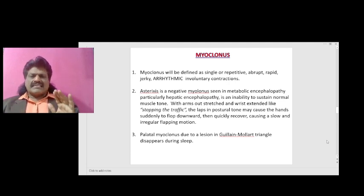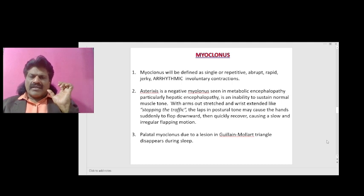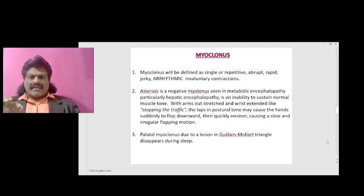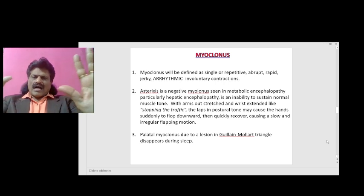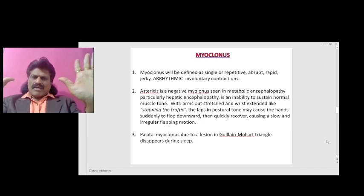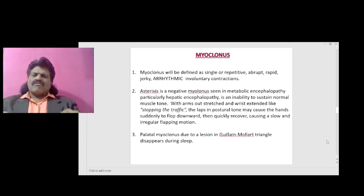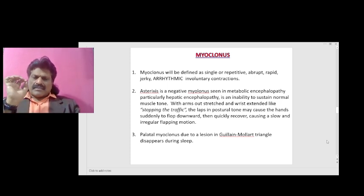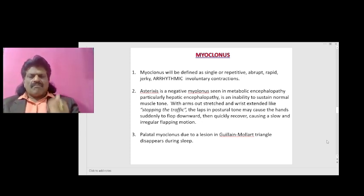Myoclonus is defined as single or repetitive, abrupt, rapid, jerky, arrhythmic, involuntary contractions. Asterixis is a negative myoclonus, seen in metabolic encephalopathy, particularly hepatic encephalopathy. It is an inability to sustain normal muscle tone: with arms outstretched and wrist extended as if stopping traffic, the lapse in postural tone may cause the hands to suddenly flop down then quickly recover, causing a slow and irregular flapping motion. Palatal myoclonus is due to a lesion in the Guillain-Mollaret triangle and it disappears during sleep.